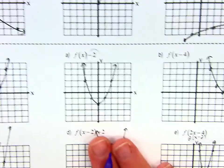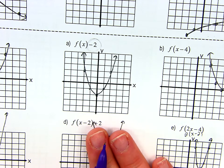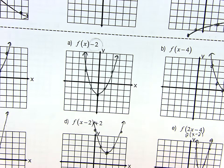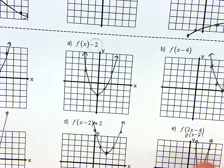What's happening in D? Right 2 and up 2. So I'm not stretching, shrinking, or anything. I'm just going to pick it up and move it. Right 2, up 2.